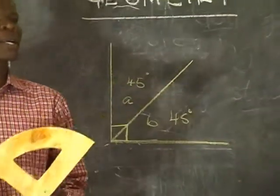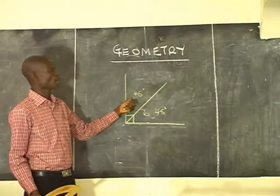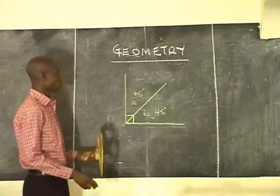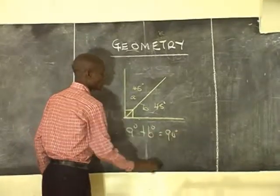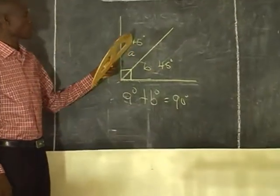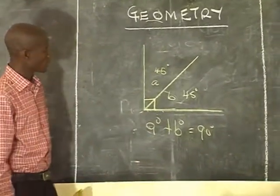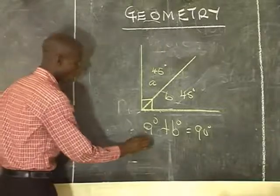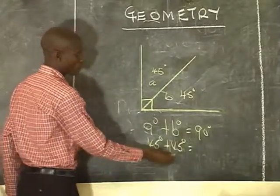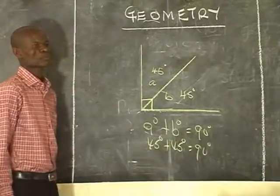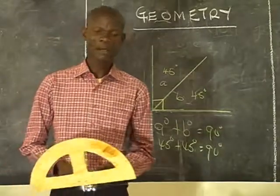To confirm what we explained — that complementary angles are angles adding up to 90 degrees — that can be confirmed when we add the size of angle A and angle B. Angle A plus angle B must add up to 90 degrees. Angle A is 45 degrees and angle B is also 45 degrees; 45 plus 45 gives 90 degrees. This confirms that complementary angles will always add up to 90 degrees.